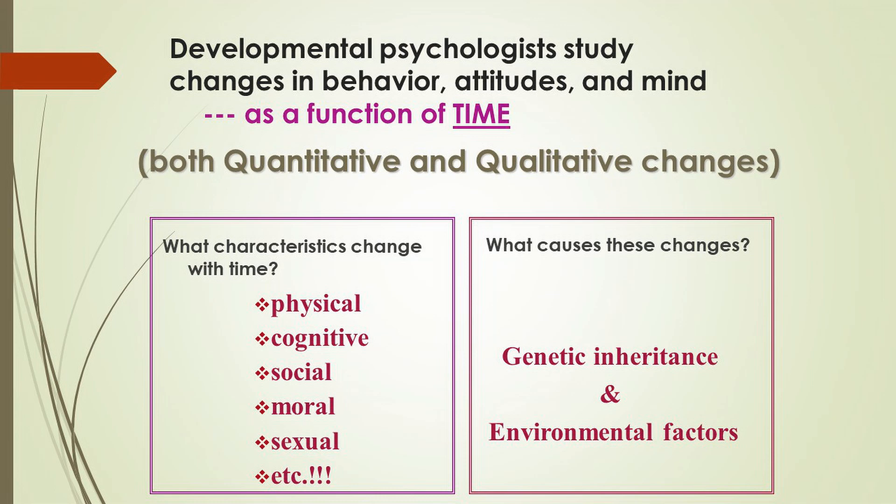Developmental psychologists are interested in both quantitative and qualitative changes. Quantitative changes are those that we can use numbers to describe — for instance, a child has a vocabulary of this size, or a child begins to spend this much more time playing with friends than in the past. Qualitative changes are different; here you're looking at differences in the quality of behavior. As an illustration, a child's cognitive abilities at one age are qualitatively different than the child's cognitive abilities at another age.